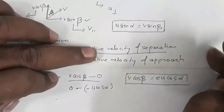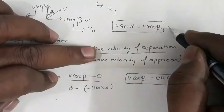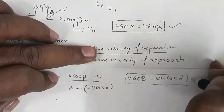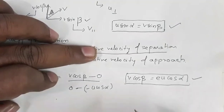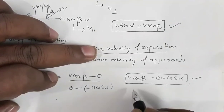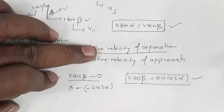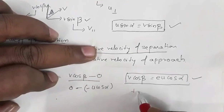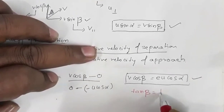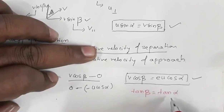Using these two relations — u sin alpha equals v sin beta, and v cos beta equals e times u cos alpha — if you divide them, we get tan beta equals tan alpha divided by e.